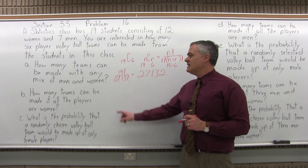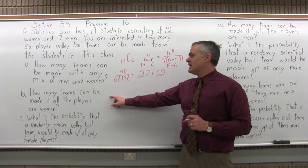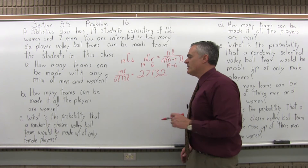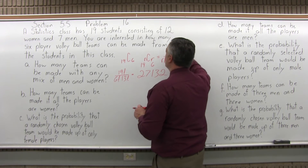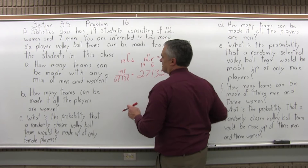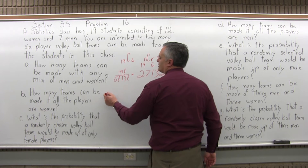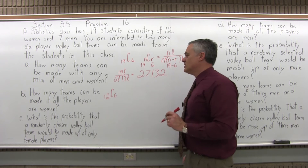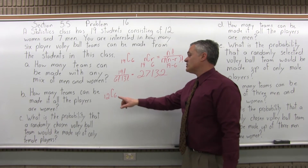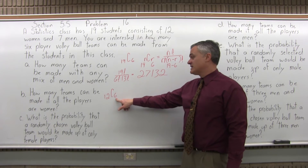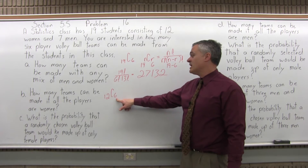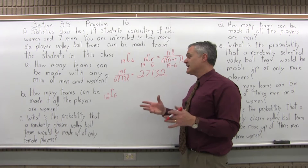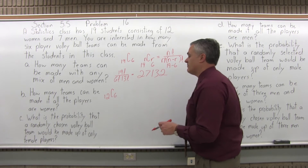Part B: how many teams can be made if all the players are women? So only women on the team. There are 12 women in the class, so you have 12 people to choose from and you're going to choose 6. Again, it's a combination — you can't have a repeat, you can't have the same woman on the team two or three times, and the order doesn't matter. If you have 6 players and rearrange them in a different order, it's the same volleyball team.